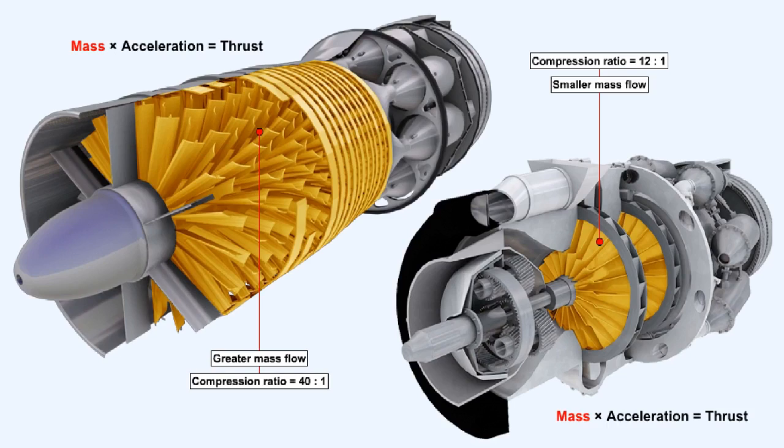Since the amount of thrust generated by a gas turbine engine depends partly upon the mass of air flowing through it, it can be demonstrated that when comparing two engines, each having the same frontal cross-sectional area, the engine which has an axial flow compressor will generate more thrust than the engine with a centrifugal flow compressor.